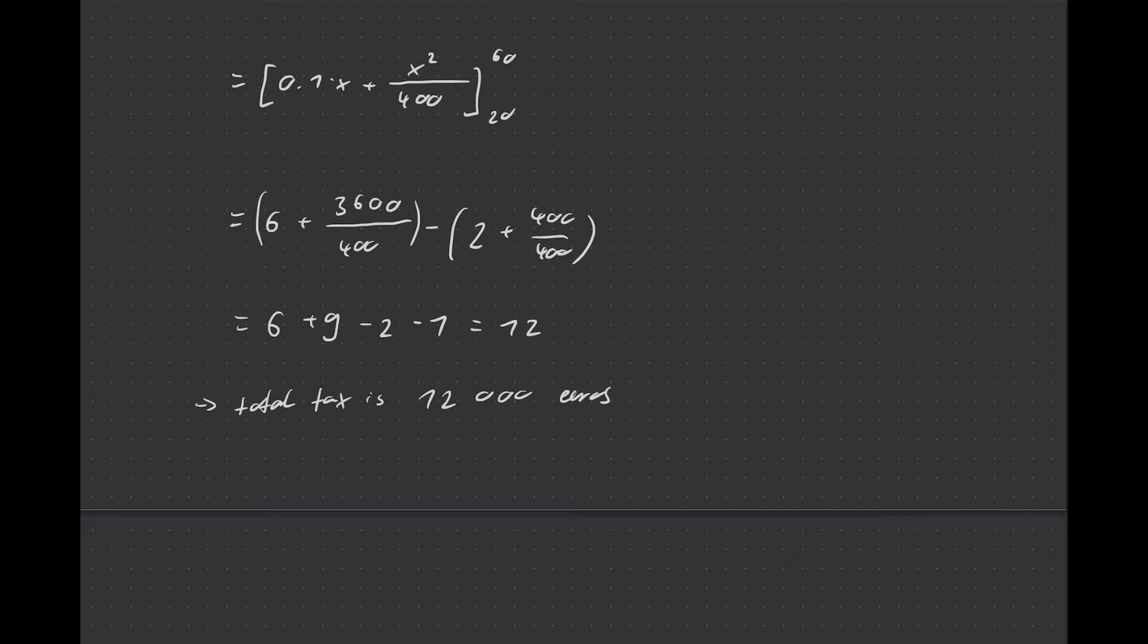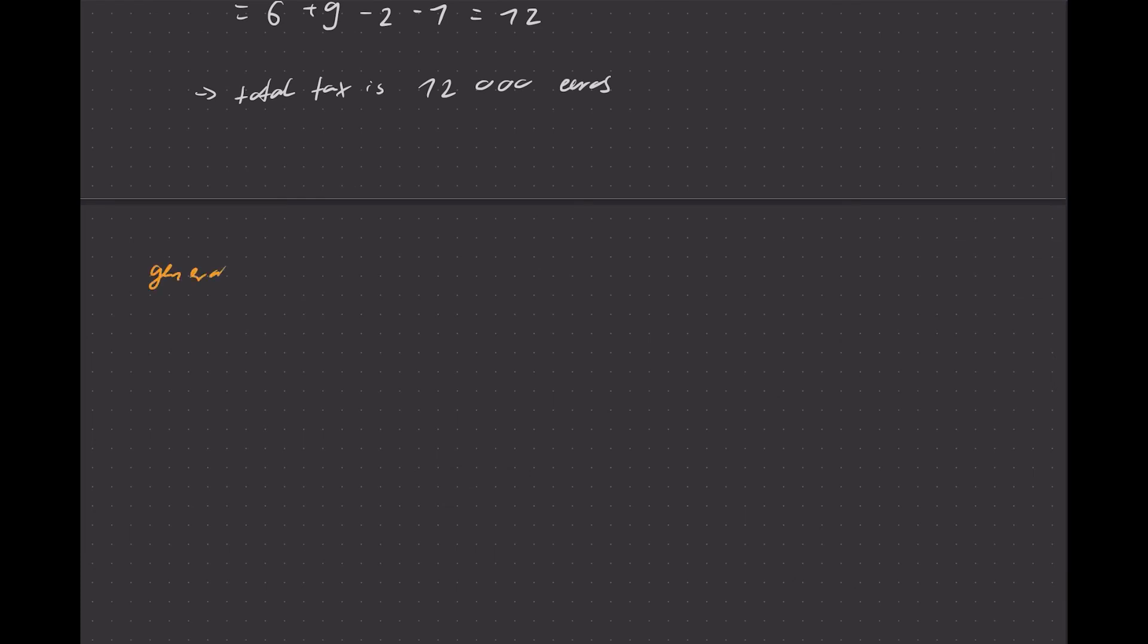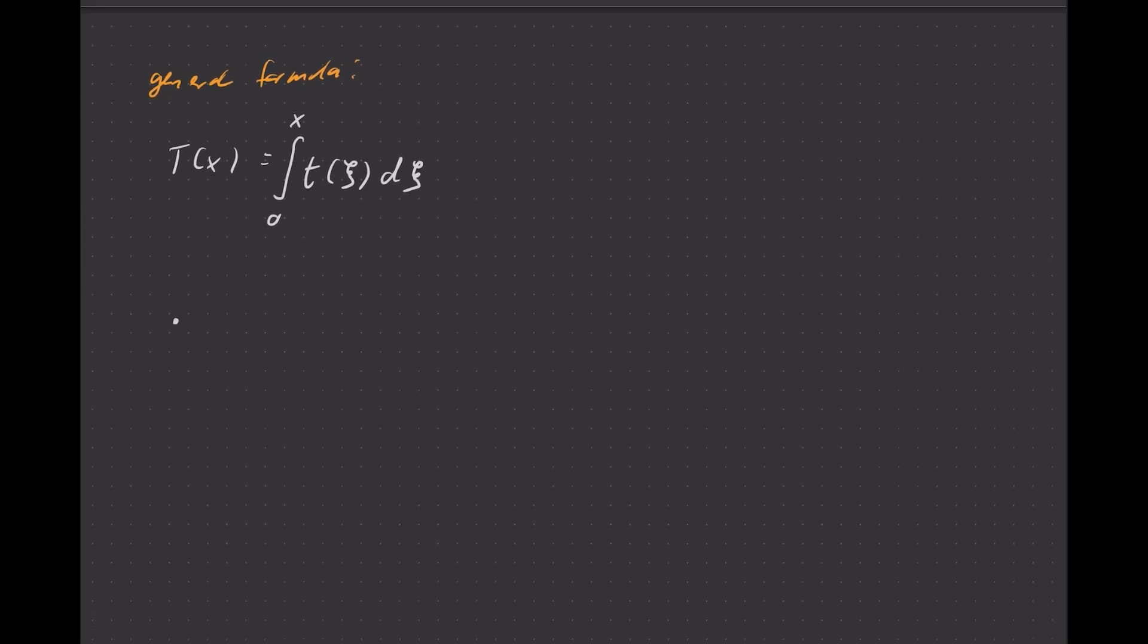Of course we can generalize that idea. Let's compute the general formula. If you want to compute T of x, what we have to do is compute the integral from 0 to x of t of xi d xi. To do that, we have to make a case distinction. For income less than 20, t of x equals the integral from 0 to x over 0 dx, so that is 0.